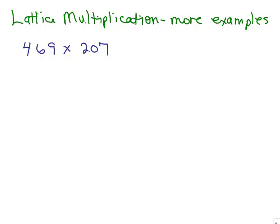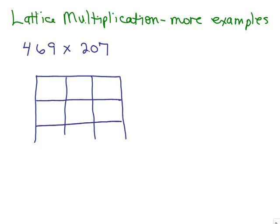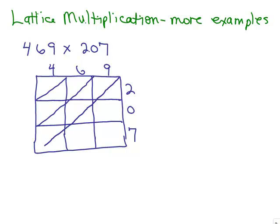There's two ways we could do this because it depends which number goes across the top and which number goes across the side. But this is going to be a three-by-three in any case. So we have to make boxes where there's three-by-three. And then we put in our diagonals for the lattice.